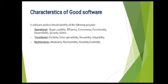Next is characteristics of a good software. We all want to create good, best software, so what should be the characteristics? A software product can be judged by what it offers and how well it can be used. The software must satisfy on the following grounds: in terms of operational, in terms of transitional, and in terms of maintenance.